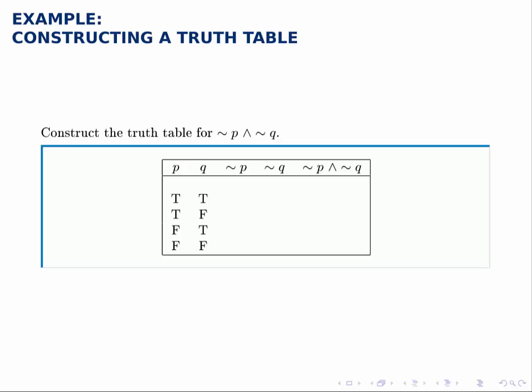To build this truth table for this final statement, what we do is build a column for each piece, building up to the final statement. So if we have not P and not Q, we need three new columns to fill in, and in each column we're just going to do one operation. So first we approach not P, we fill in that column, then we'll handle not Q, and then we'll combine those two columns with the and operation.